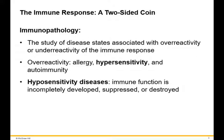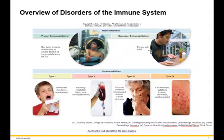Immunopathology is the study of disease associated with overreactions or underreactions of the immune response. Pathology refers to the study of disease, and immuno refers to the immune response, so it's basically diseases of the immune system. Overreactivity is also called an allergy or hypersensitivity, and autoimmunity. We'll stick to hypersensitivity and hyposensitivity, though some of these diseases have a special designation as allergies, and some hypersensitivities are classified as autoimmunity.